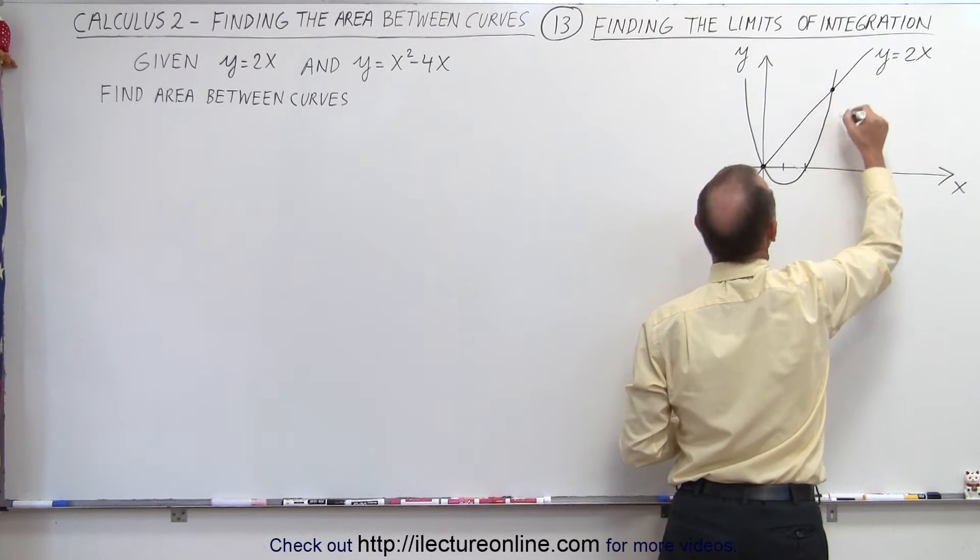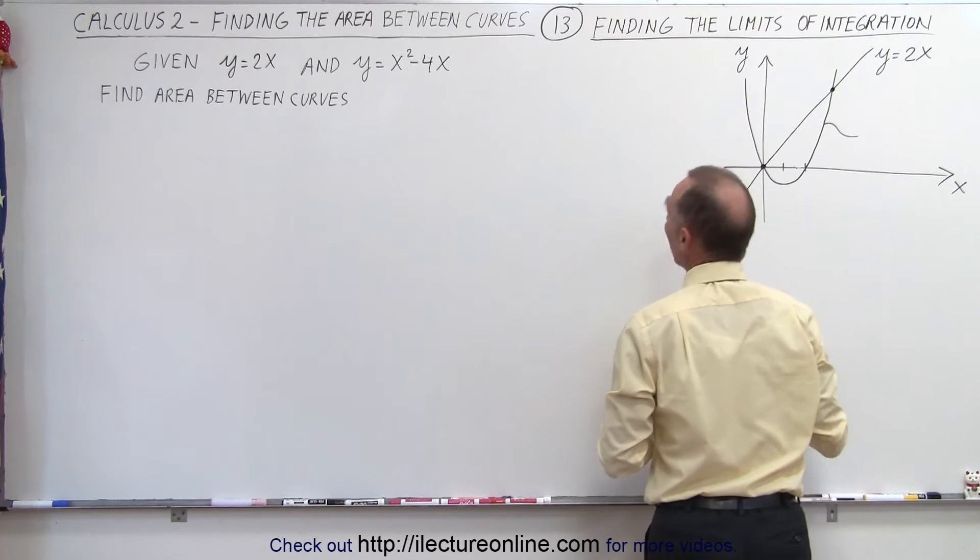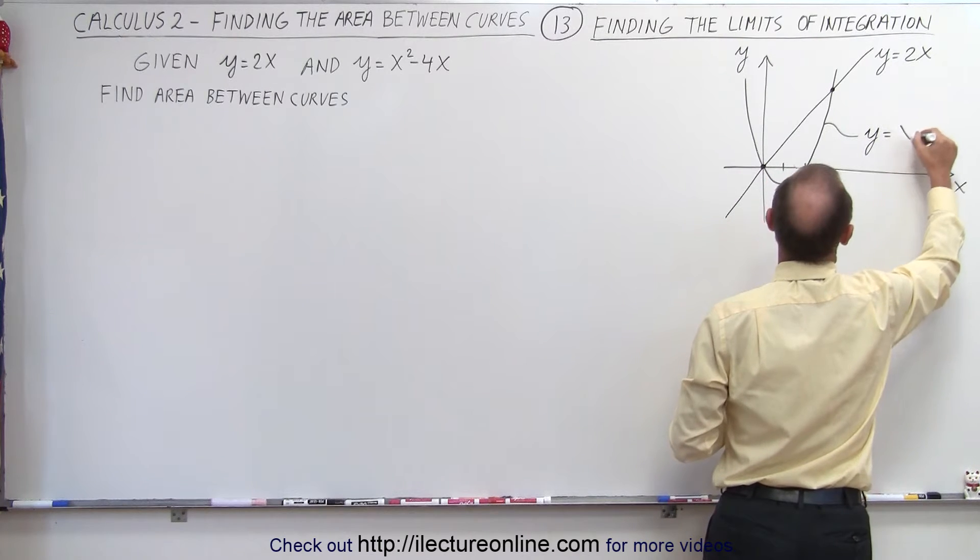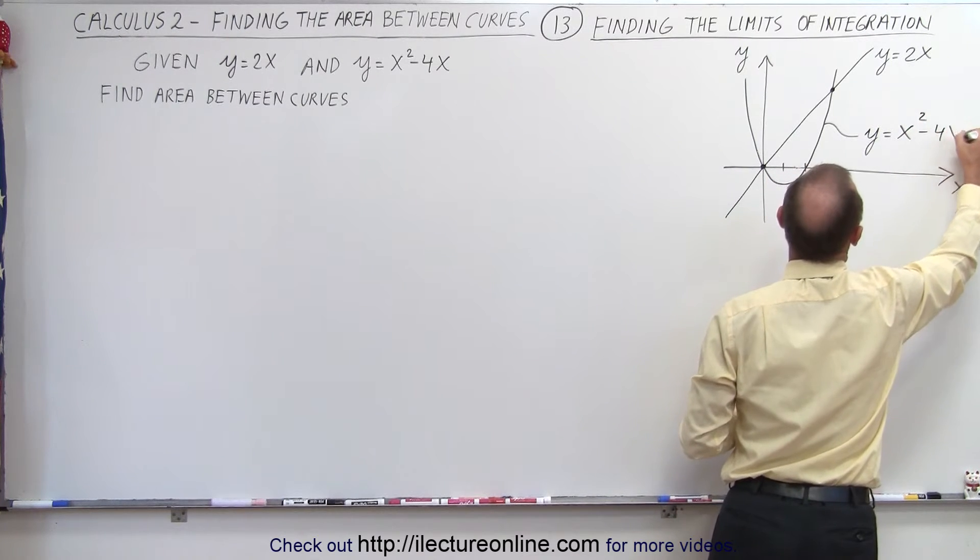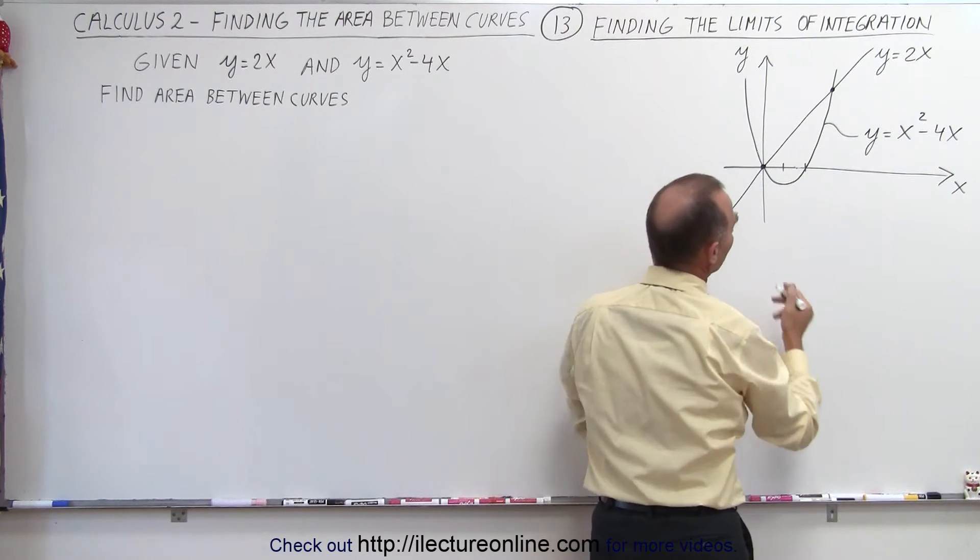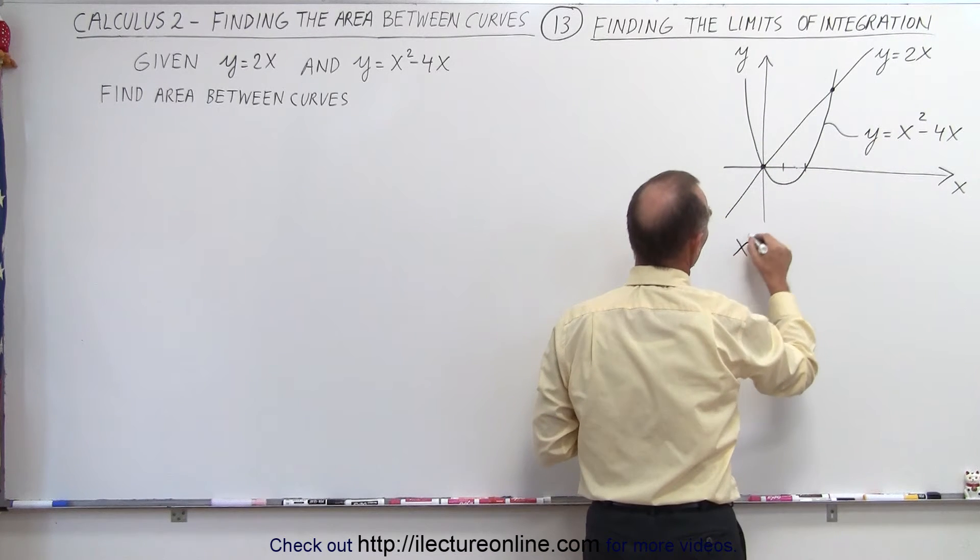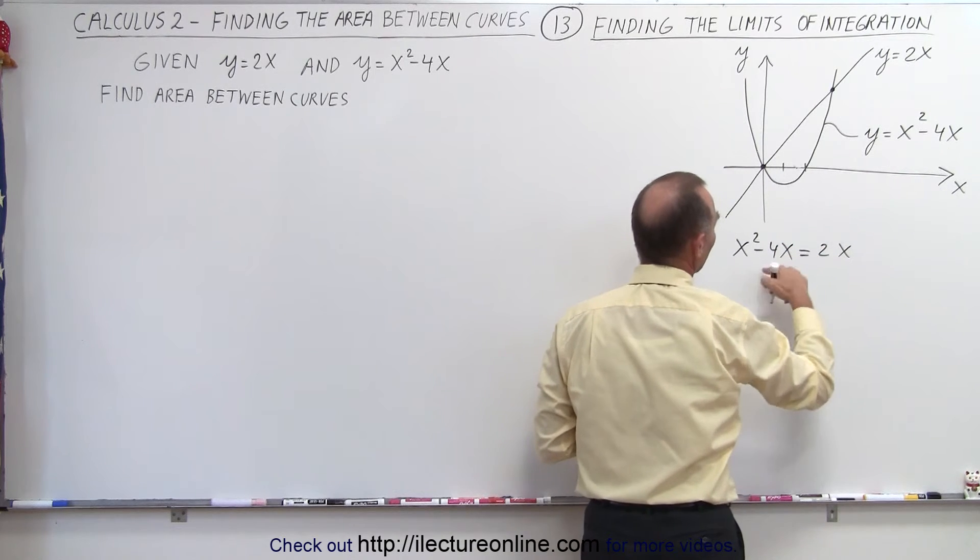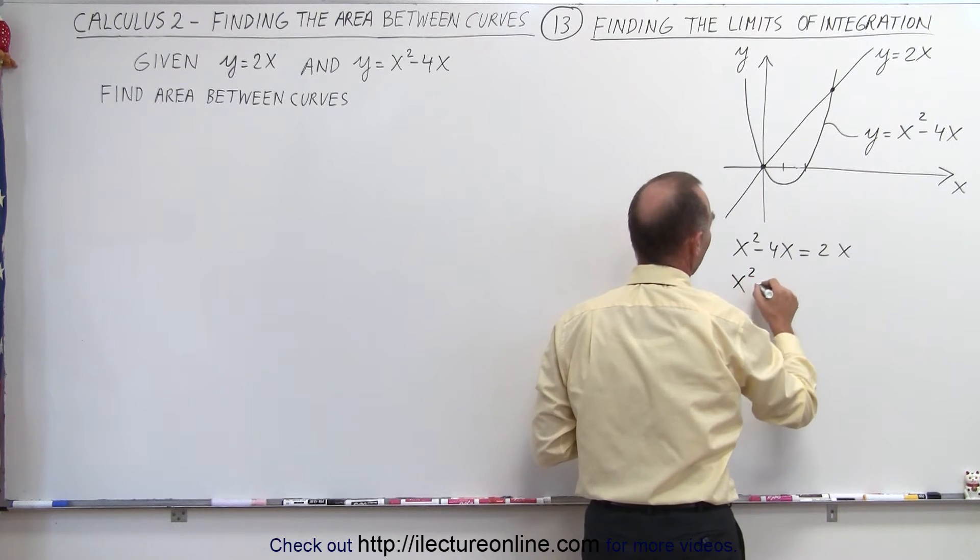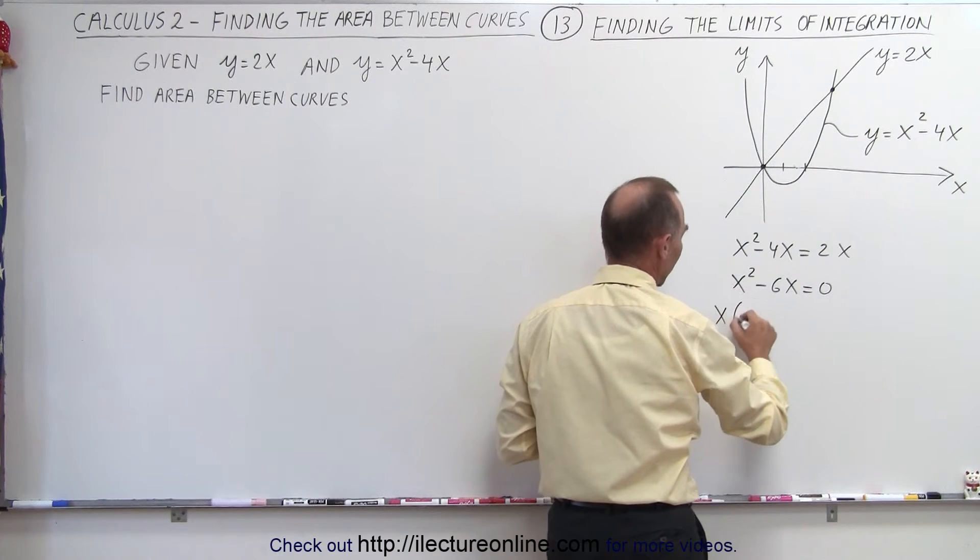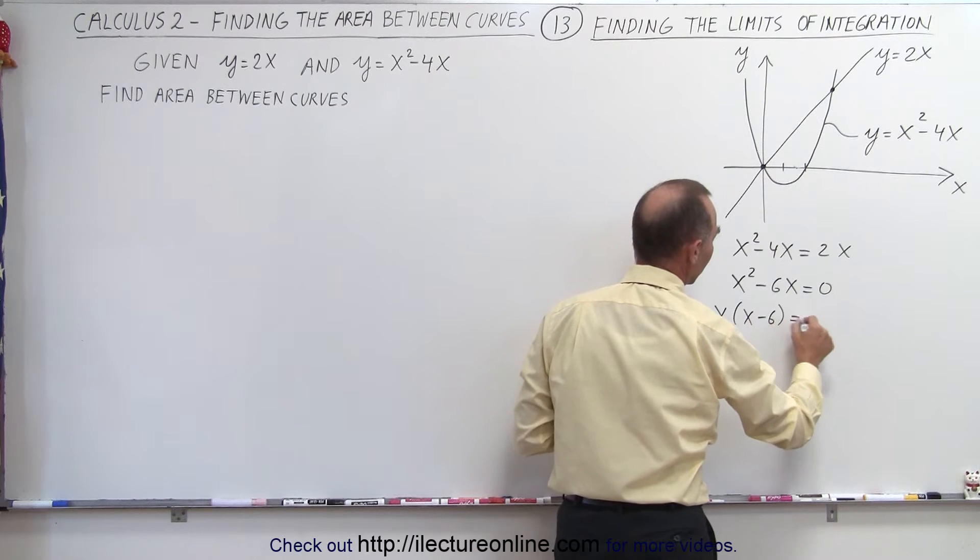Well, that means we need to solve those two equations simultaneously. Y is equal to x squared minus 4x, so when we set them equal to each other, we get x squared minus 4x equals 2x. Moving that across, we get x squared minus 6x equals zero, and when we factor out an x, we get x times x minus 6 equals zero.